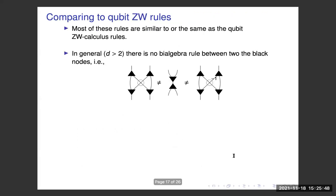Comparing to the qubit ZW calculus rules: most rules are similar or the same. However, something is different in general — for dimension higher than two, there is no bialgebra rule between the two black nodes. In the qubit case, the multiplication and comultiplication rules play an important role — for example in the completeness proof — but in the higher-dimension case you don't have this.